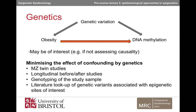These strategies include studies of monozygotic twins discordant for the phenotype of interest, longitudinal studies of people before and after they develop the phenotype, genotyping the individuals in the study and then adjusting for or stratifying by genotype. And finally, if genotype data are not available for the study sample, a less reliable approach would be to identify whether there are any genetic variants reported in the literature to be strongly associated with your epigenetic sites of interest, and then compare those genetic variants to those identified in a GWAS of your phenotype of interest. This wouldn't allow us to account for the genetic effect analytically, but it could provide some evidence of confounding by genetics.